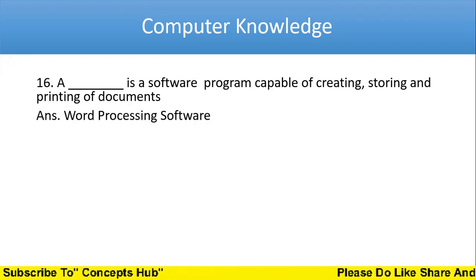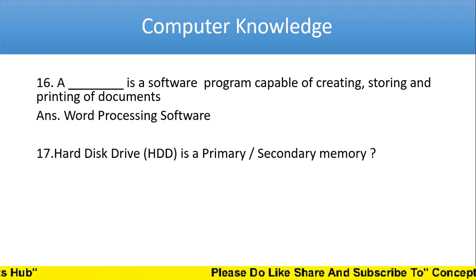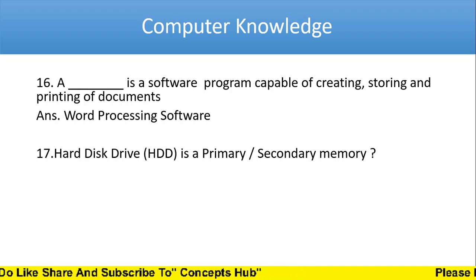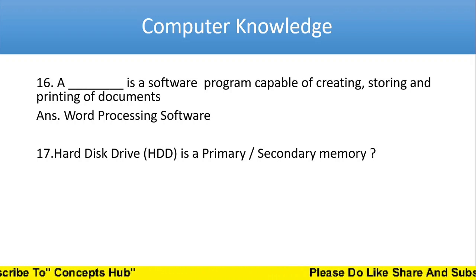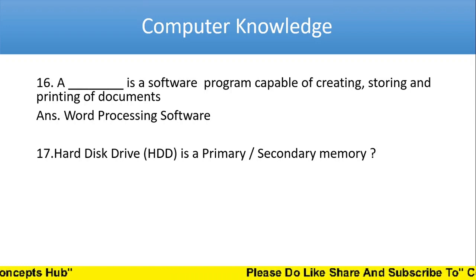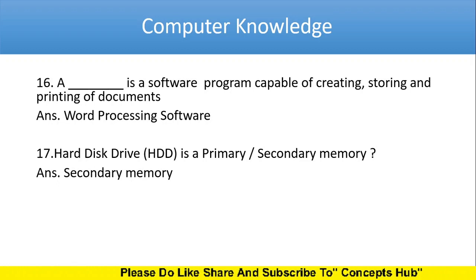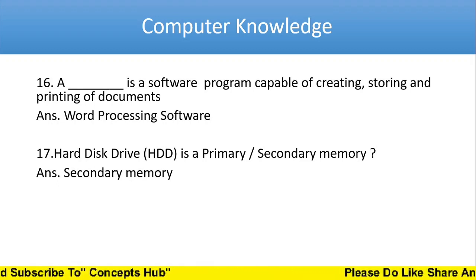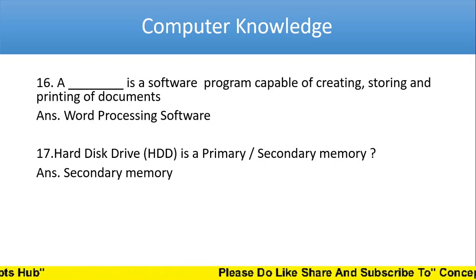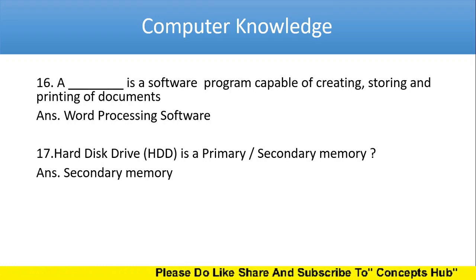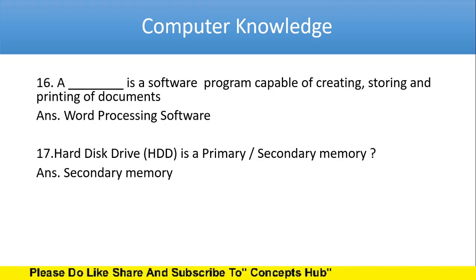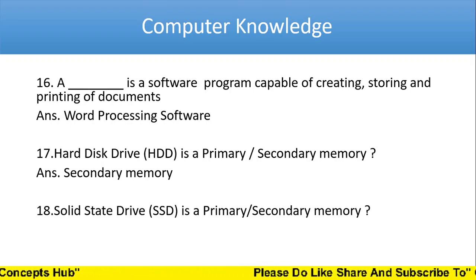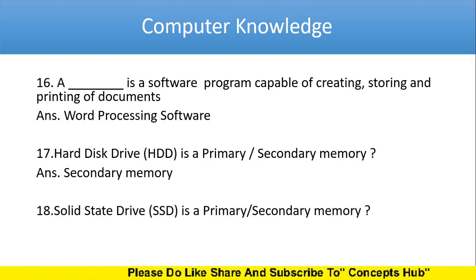Next one: hard disk drive (HDD) is a primary memory or secondary memory? The answer is secondary memory. That means after power is off, the data is still stored. If it is volatile, once the power is off the data will not be stored.